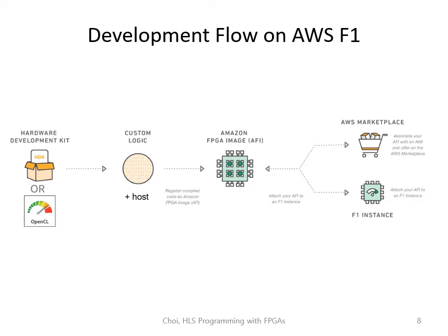Here's the development flow on AWS F1. First, you launch the FPGA developer AMI, which includes the programming environment and the hardware development kit or HDK. Then you would develop an FPGA custom logic. In this class, we're going to use C-based high-level synthesis to make custom logic, but you can also choose to use Verilog or OpenCL-based HLS. You should also make a host program that controls the custom logic. Based on these source codes, Xilinx Vitis will make a hardware bitstream or AFI for you.